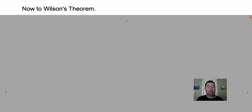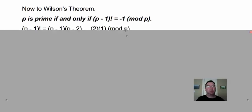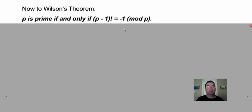This is Wilson's theorem. It says that p is prime if and only if (p - 1)! ≡ -1 (mod p).